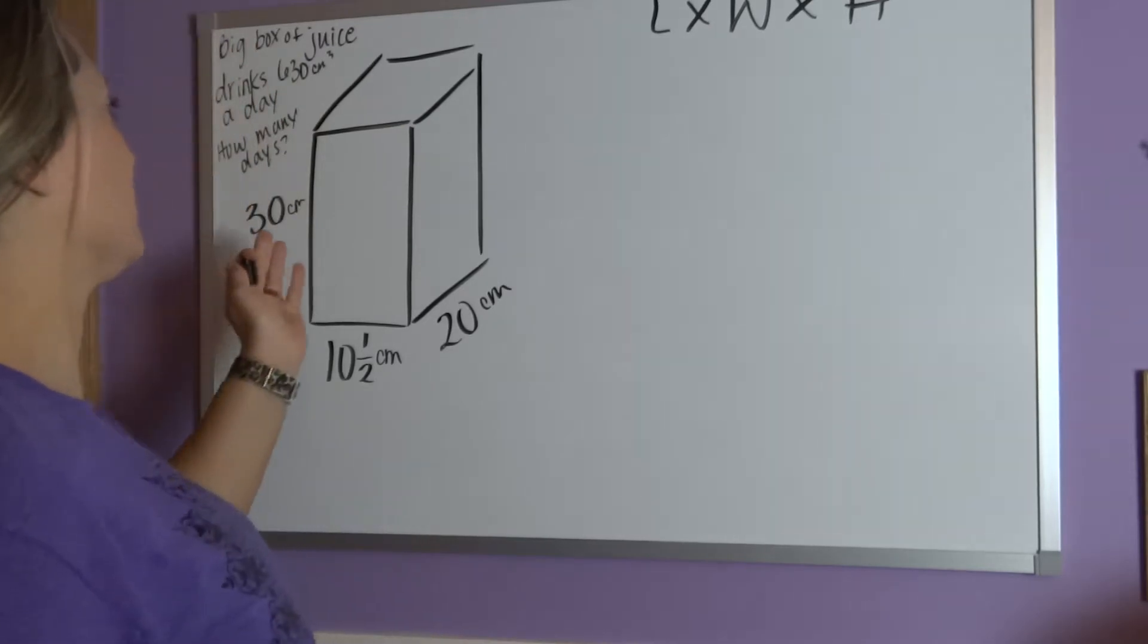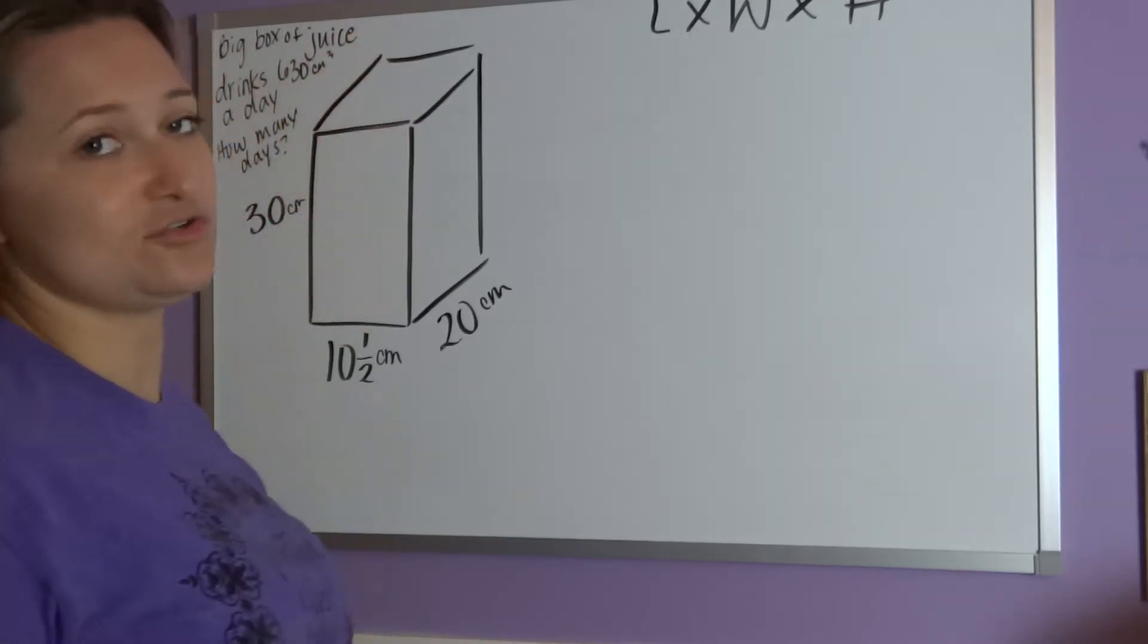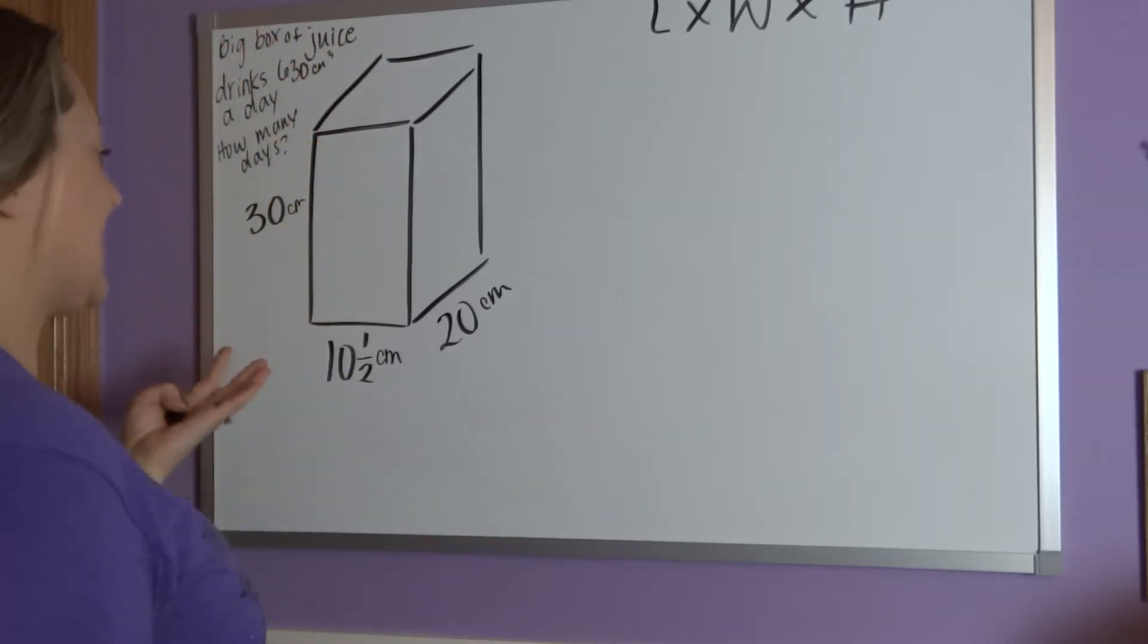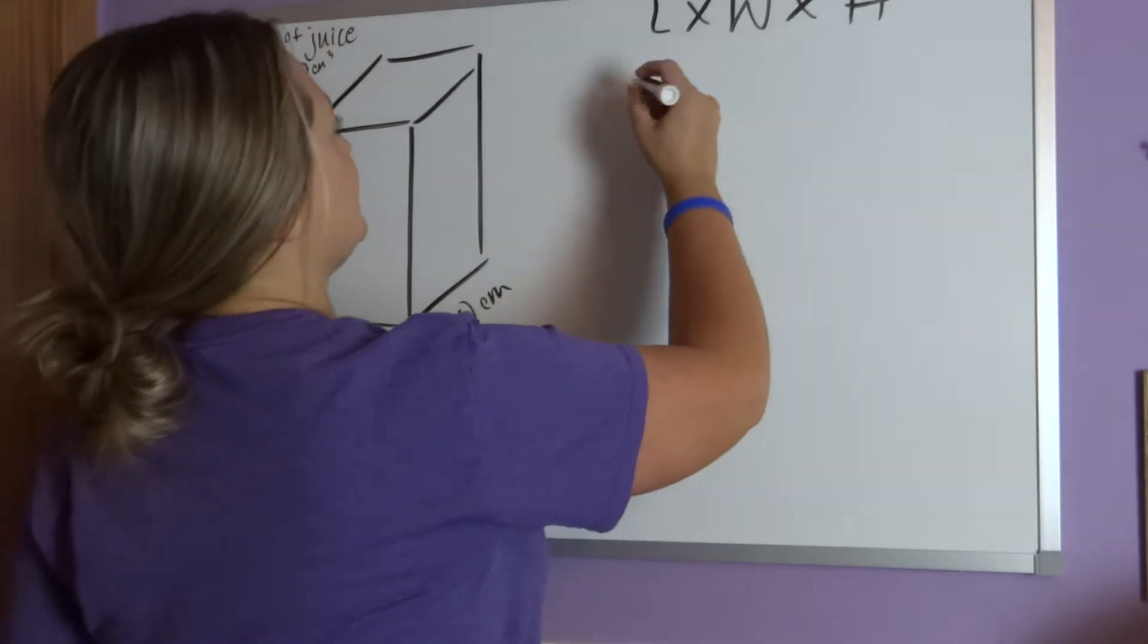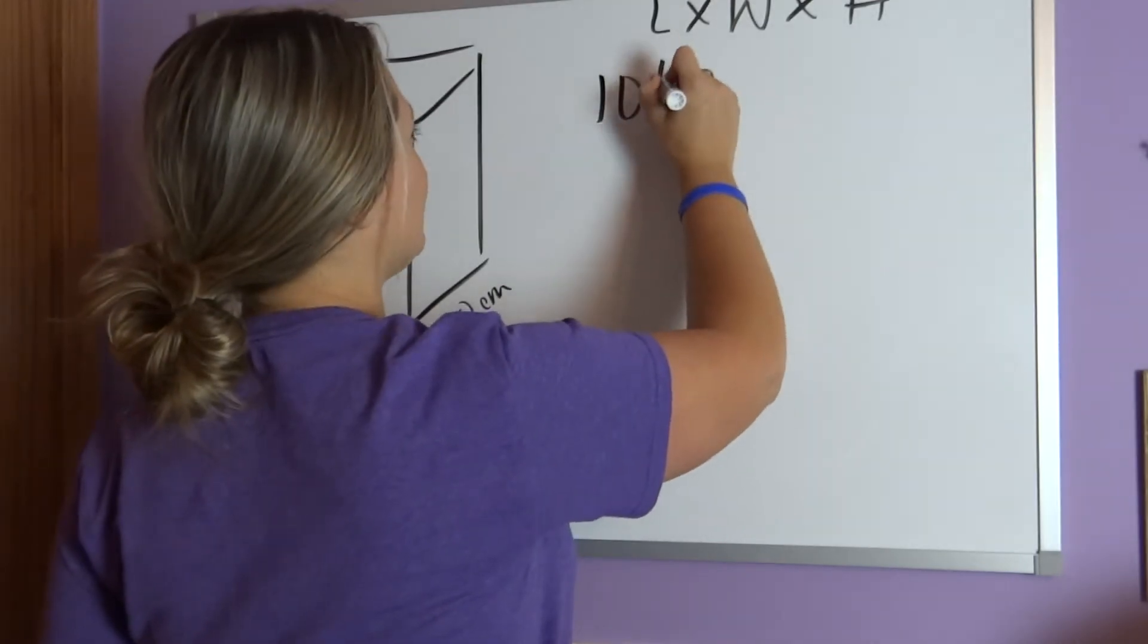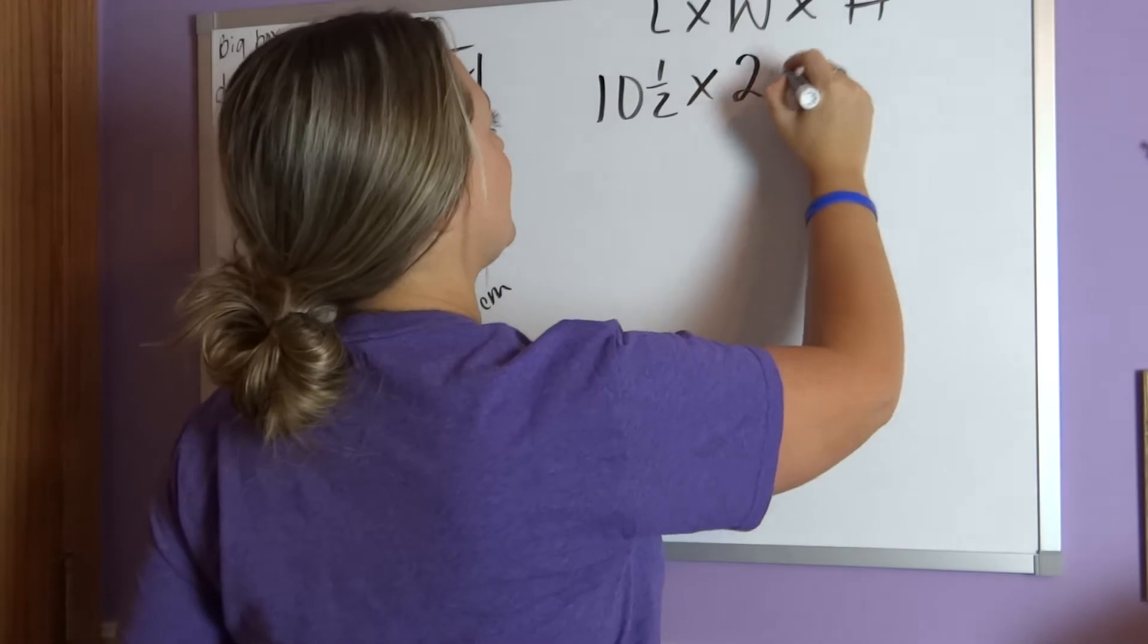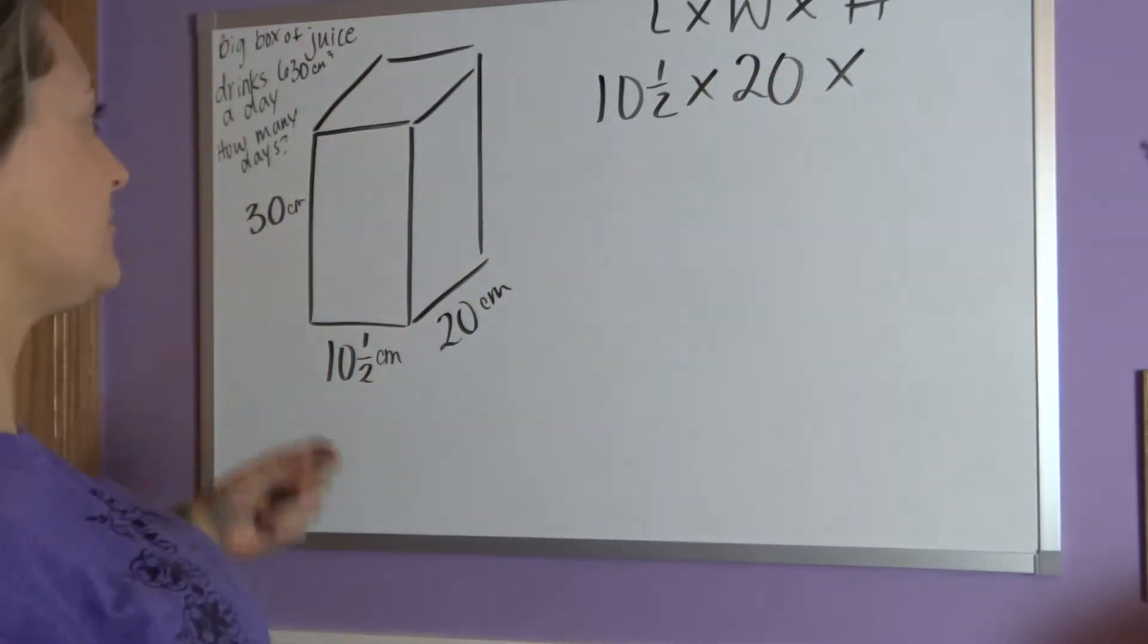First you have to find what is the volume of all of the juice in this container by multiplying the three dimensions. So, the length we could say is 10 and a half times the width, which is 20, times the height, which is 30.